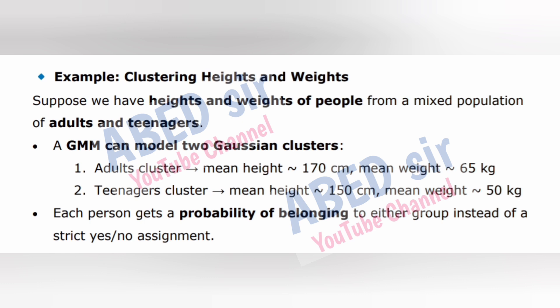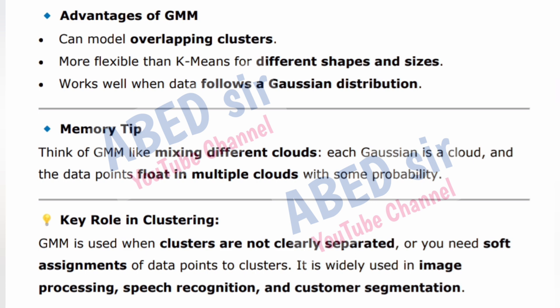Example: Clustering heights and weights. Suppose we have heights and weights of people from a mixed population of adults and teenagers. A GMM can model two Gaussian clusters: Adults cluster — mean height ~170 cm, mean weight ~65 kg; Teenagers cluster — mean height ~150 cm, mean weight ~50 kg. Each person gets a probability of belonging to either group instead of a strict yes/no assignment. Advantages of GMM: can model overlapping clusters, more flexible than k-means for different shapes and sizes, works well when data follows a Gaussian distribution. Memory tip: Think of GMM like mixing different clouds — each Gaussian is a cloud and data points float in multiple clouds with some probability.